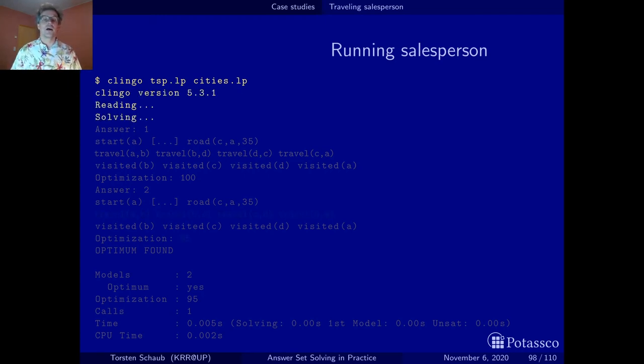It reads the file solves it and at some point the first solution pops up. So in this solution we travel from a to b from b to d from d to c from c to a and we have induced a penalty or the sum of the distances is 100. Now we found one solution and it has value 100.